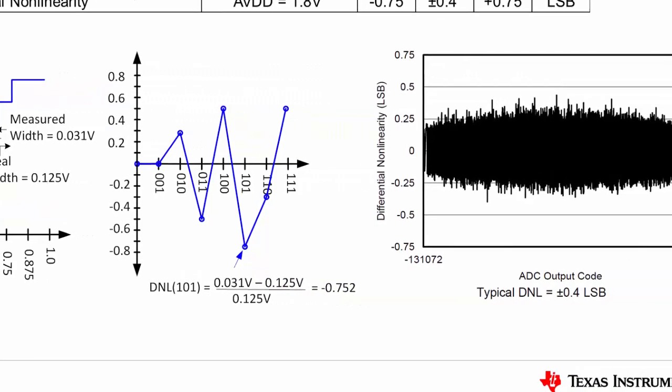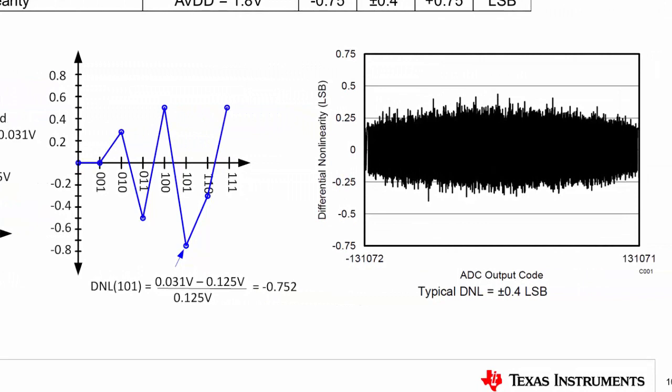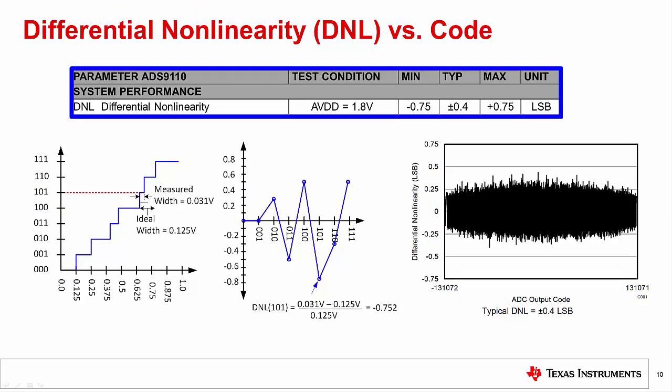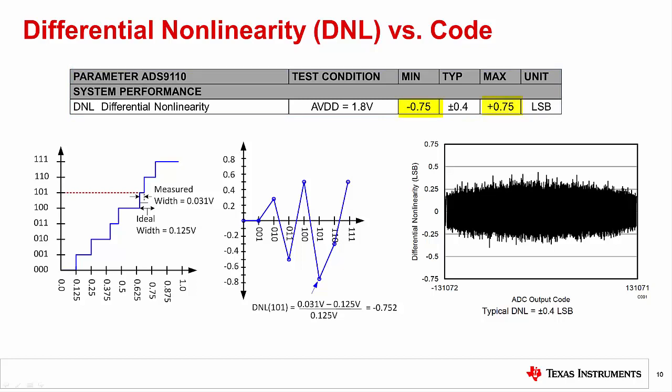The plot on the right shows a more practical example of an 18-bit converter. In this case, thousands of DNL measurements are being displayed. And you can see that the DNL is typically less than 1 half of an LSB. At the top of the page is an example of a DNL specification. The minimum and maximum limits on this specification indicates that all ADC codes are tested, and the DNL will be less than plus or minus 0.75 LSB for all passing devices.